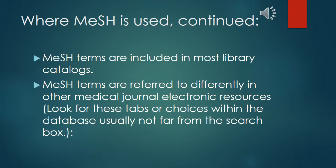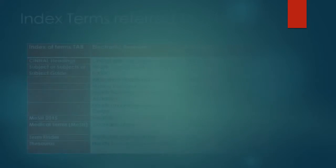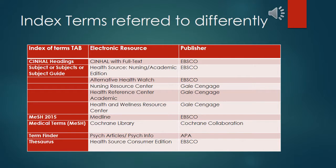MeSH terms are included in most library catalogs. MeSH terms are referred to differently in other medical journal electronic resources — look for a tab within the database, usually not far from the search box. For example, EBSCO CINAHL uses CINAHL headings, and some EBSCO CINAHL products refer to the index tabs as subject, subjects, or subject guide. EBSCO MEDLINE's index tab is MeSH 2015. Cochrane Library has Medical Terms MeSH. PsycARTICLES uses Term Finder, and Health Source Consumer Edition's index tab is Thesaurus.